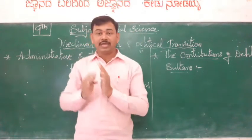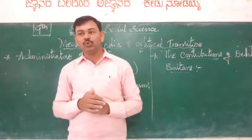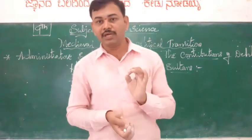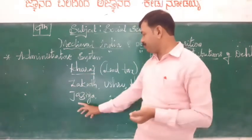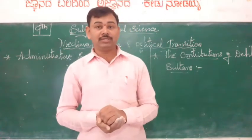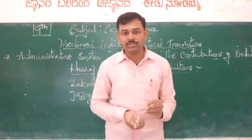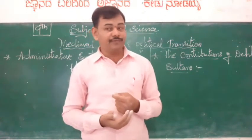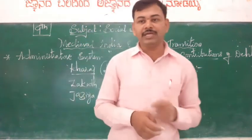Jizya, tax on property, import duty, and horse tax were the main sources of income during the Sultan's rule. The main resources of the kingdom were various taxes like kharaj, zakat, ushr, khums, and jizya, along with import taxes and house taxes. There were also officials appointed specifically for the collection of these taxes. These were the important taxes that existed in the time of the Sultanates.